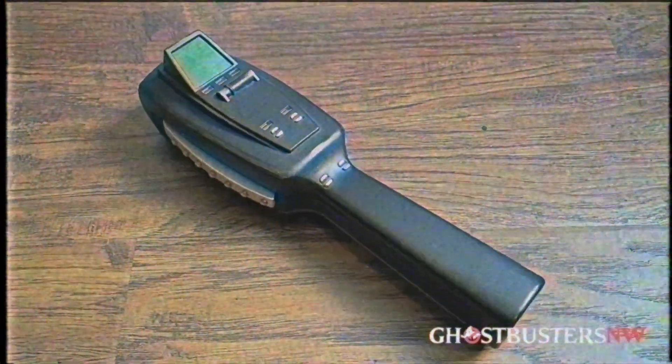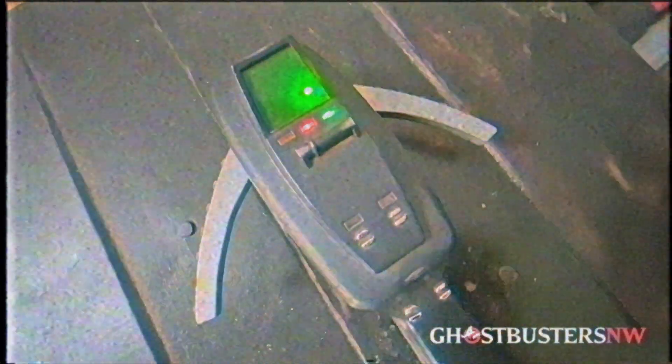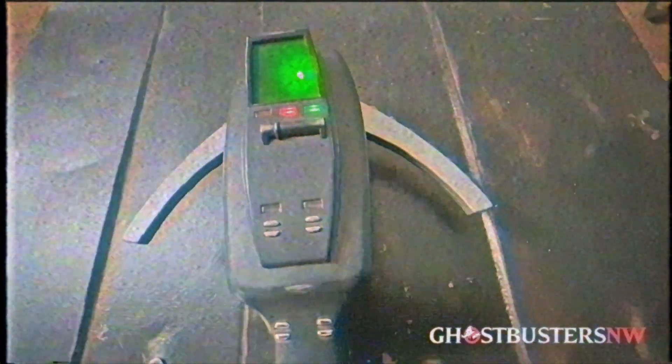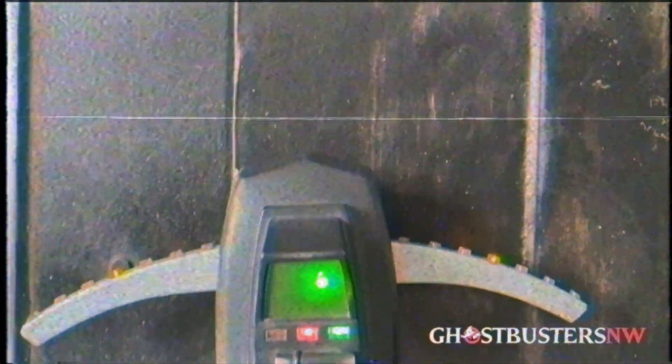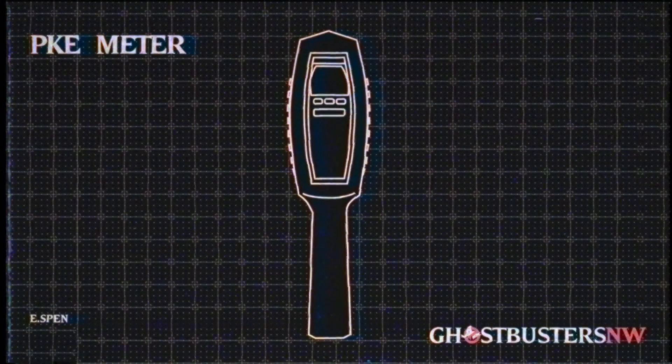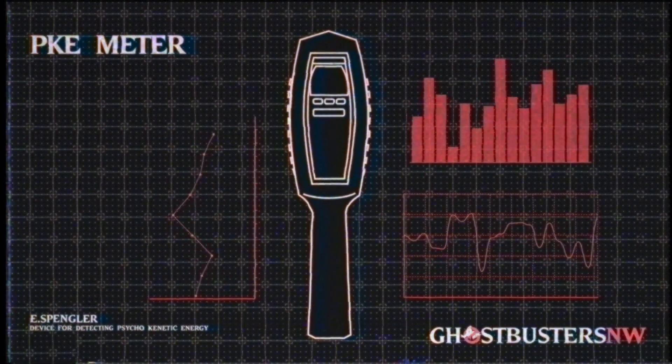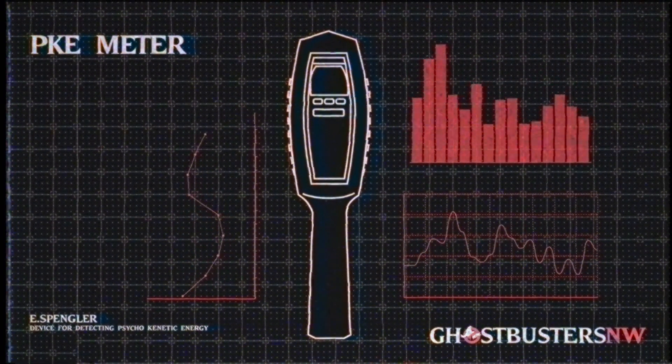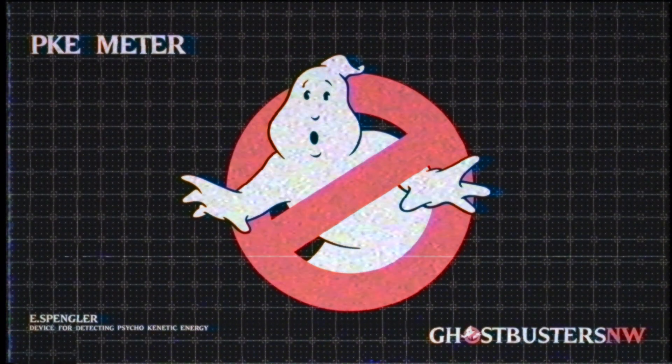The PKE meter is the first tool a Ghostbuster uses on any paranormal investigation, because before you can bust a ghost, you gotta find it first. No ghost can avoid the PKE's detection. Invented by Dr. Egon Spengler when he was still a professor at Columbia University, the psychokinetic energy meter became a staple in his next career as a Ghostbuster.